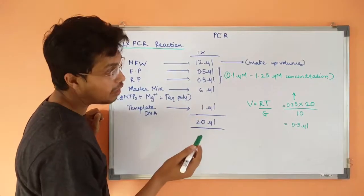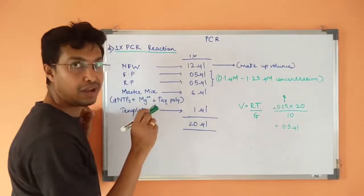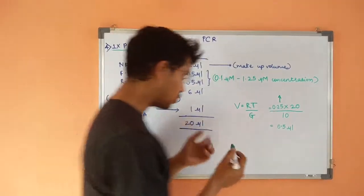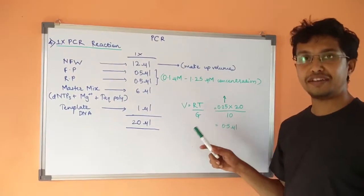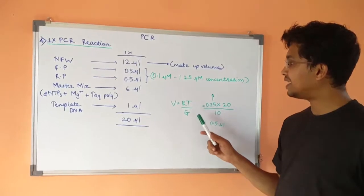If I want to make a concentration of 0.25 micromolar, how I can do it? You will see over here. You will be very much familiar with this particular formula. V is equal to RT by G.